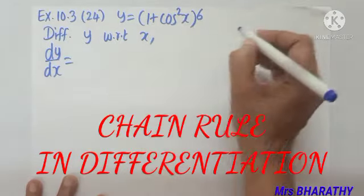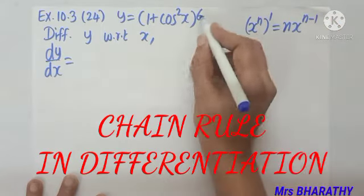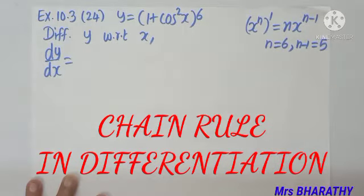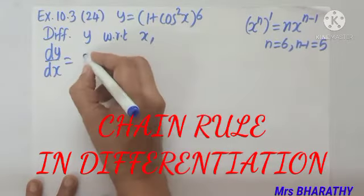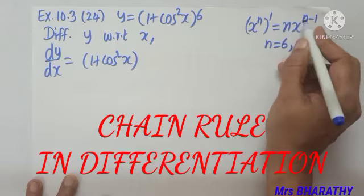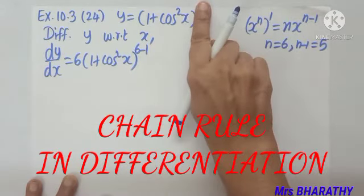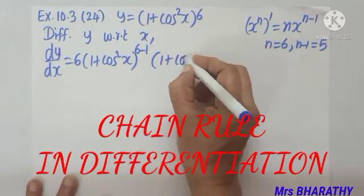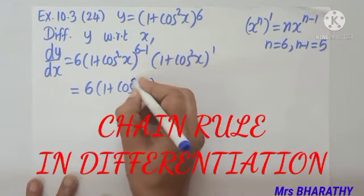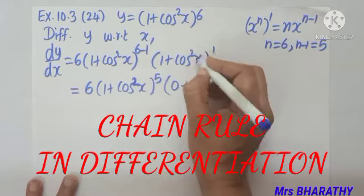As we differentiate, recall the formula: xⁿ derivative is n·xⁿ⁻¹. Here n = 6, so n−1 = 5. We write the bracket to the power n−1, that is (1 + cos²x)⁶⁻¹ = (1 + cos²x)⁵. Hide the power; what is inside the bracket we need to differentiate. The next step: 6·(1 + cos²x)⁵, where the derivative of 1 is 0.